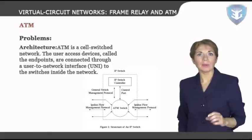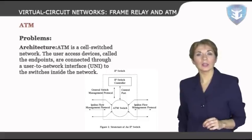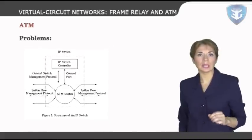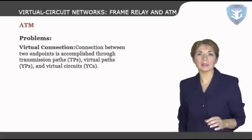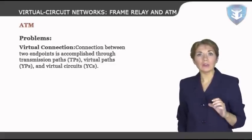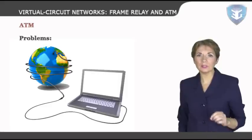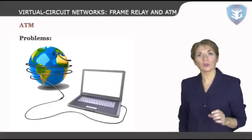ATM architecture: ATM is a cell-switched network. The user access devices, called the endpoints, are connected through a user-to-network interface, or UNI, to the switches inside the network. The switches are connected through network-to-network interfaces, or NNIs. Virtual connection: connection between two endpoints is accomplished through transmission paths, or TPs, virtual paths, or VPs, and virtual circuits, or VCs. A transmission path, or TP, is the physical connection between an endpoint and a switch, or between two switches. Think of two switches as two cities — a transmission path is the set of all highways that directly connect the two cities.